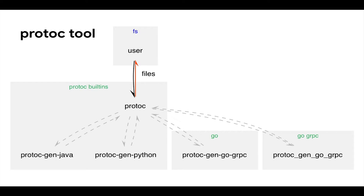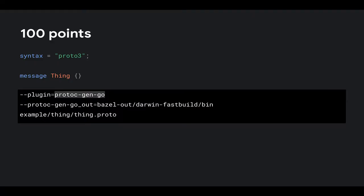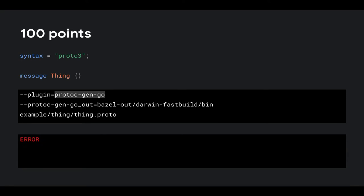To explore that further, I'm going to play a little game. I'm calling it 'Where does this go?' — the triple star is my generated file, and you will be given a proto file and some options, and you have to predict where the file is going to end up. For the first one, a super simple proto file with protocgengo — where does this end up? Well, it doesn't go anywhere. This is an error because protocgengo actually doesn't know where to put this.